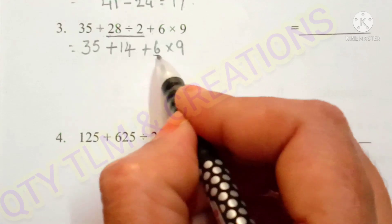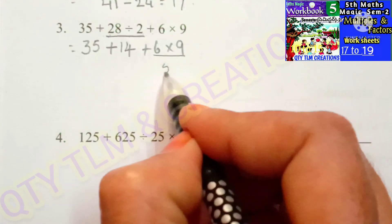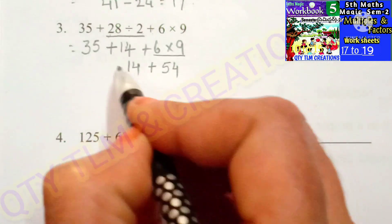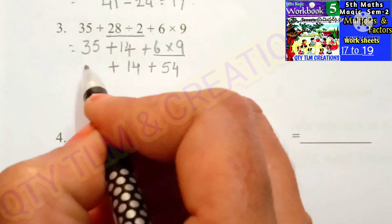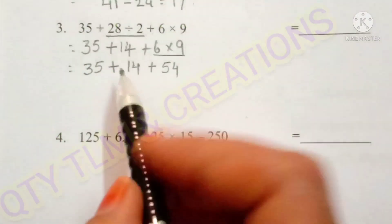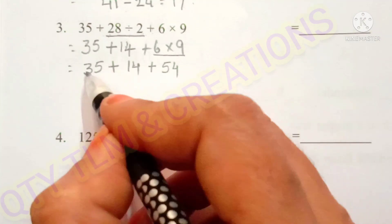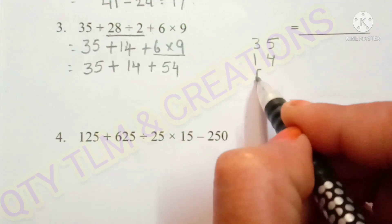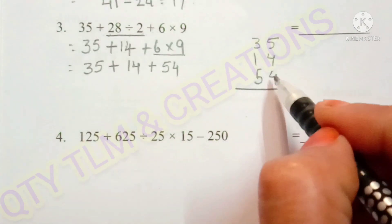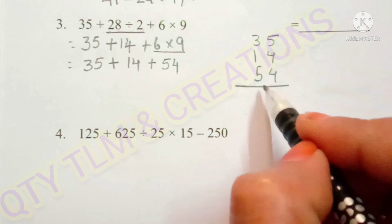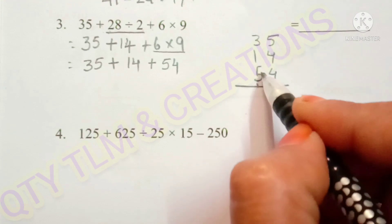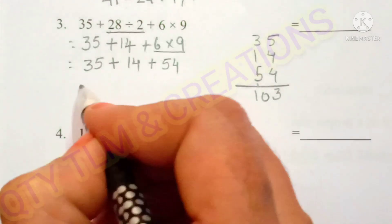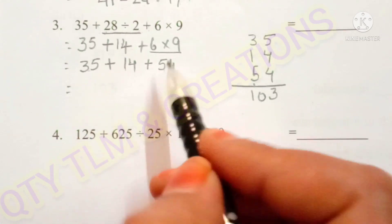Plus 14 plus 6 into 9. Next operation is multiplication. So 6 times 9 is 54. Plus 14 plus 14 plus 35. So next operation is addition. We add these numbers: 35, 14, 54. So 4 plus 4 is 8, plus 5 is 13. 1 plus 5 is 6, plus 1 is 7, plus 3 is 10. So when we add these numbers, we get 103.